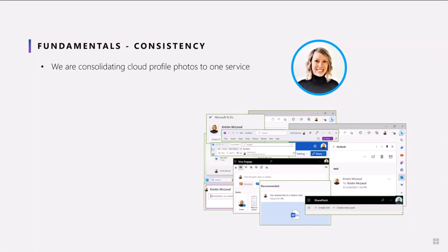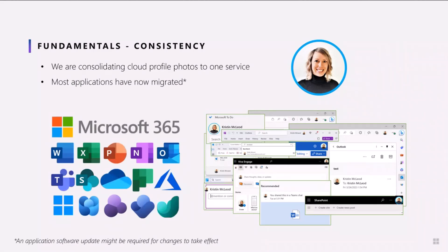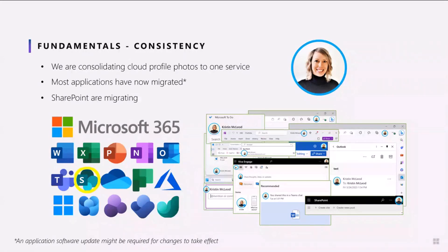The first key foundational piece we're focusing on is to ensure a consistent user profile photo is used across Microsoft 365 products, and that's by consolidating cloud profile photos to one service. We're now a good deal of the way there, which means that most Microsoft 365 products have already migrated to the consolidated photo service. That includes the Office and Outlook products, Themes, OneDrive, Forms, Windows, and the Viva Suite, amongst others. Also, SharePoint is now in the process of migrating to the cloud service, so we're getting very close to a one cloud profile photo to rule them all situation.